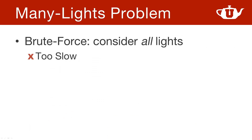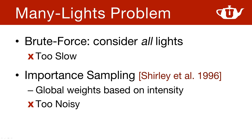So what do we do? The standard approach is to brute force it, meaning look at all lights while shading. Obviously that can be too slow if we have many lights. When we have too many lights, we can do importance sampling by considering only a fraction of the lights. The method described by Pete Shirley and his colleagues suggests using light intensities as importance weights. In the absence of any other information, that's probably the best we can do, but it doesn't always provide the best weights because they're not localized — meaning we're not getting different sets of weights at different parts of a scene, which is really crucial.